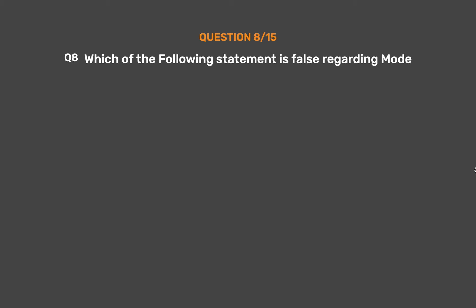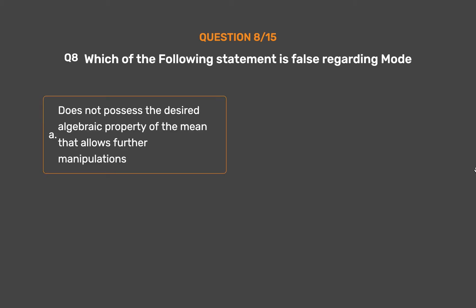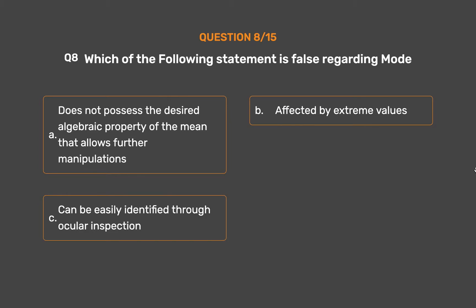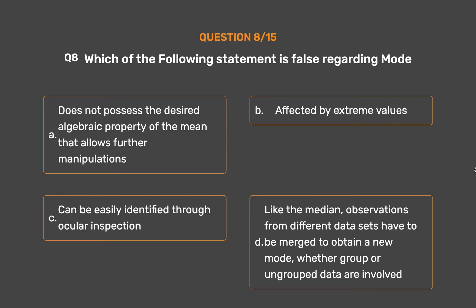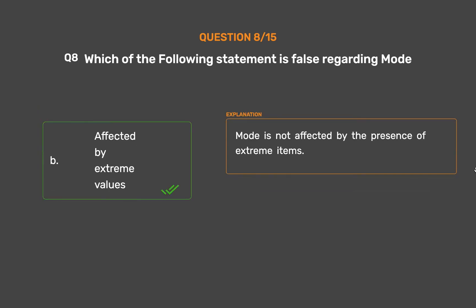Question number 8. Which of the following statements is false regarding mode? Option A: Does not possess the desired algebraic property of the mean that allows further manipulations. Option B: Affected by extreme values. Option C: Can be easily identified through ocular inspection. Option D: Like the median, observations from different data sets have to be merged to obtain a new mode, whether grouped or ungrouped data are involved. The correct answer is Option B: Affected by extreme values. Mode is not affected by the presence of extreme items.